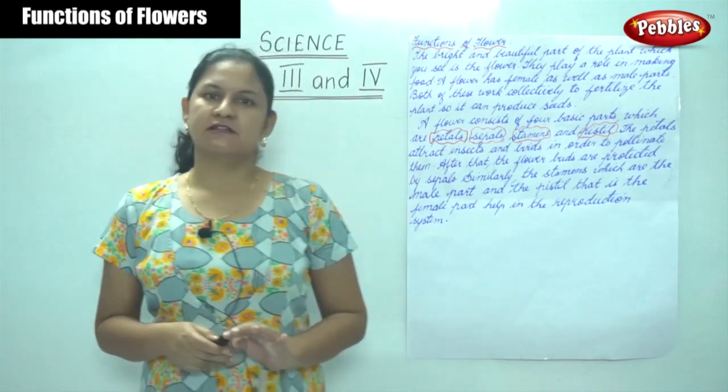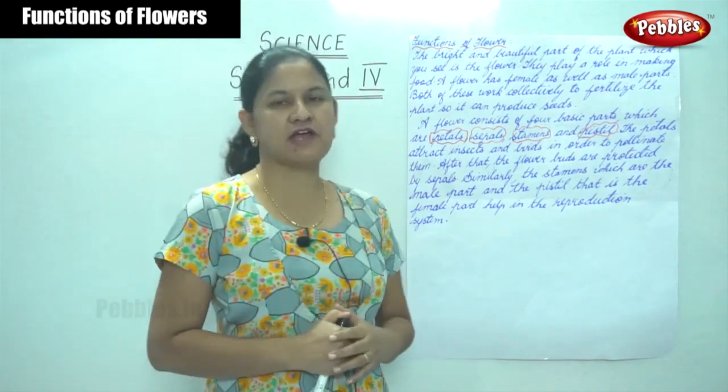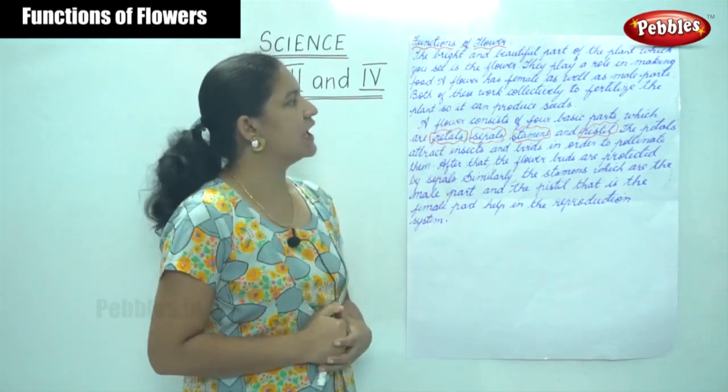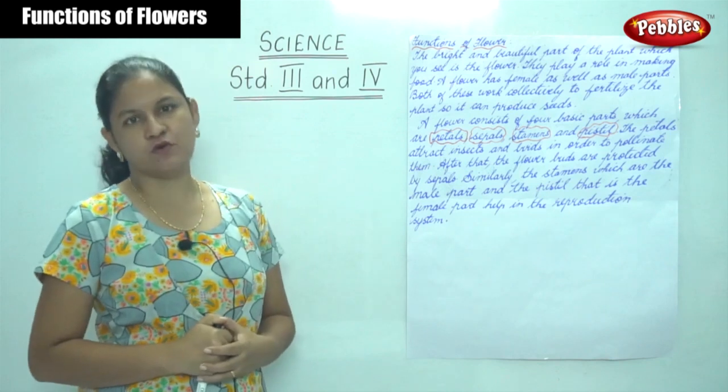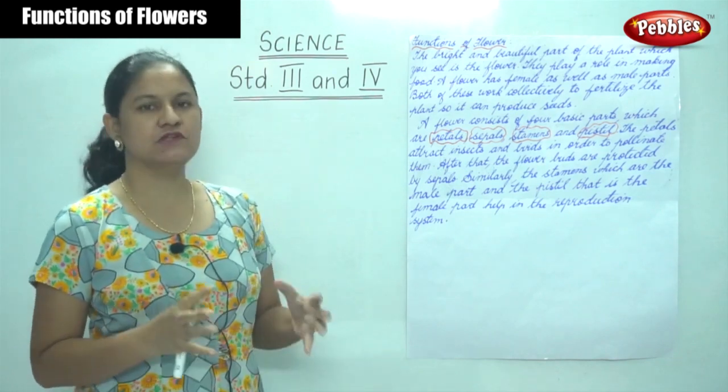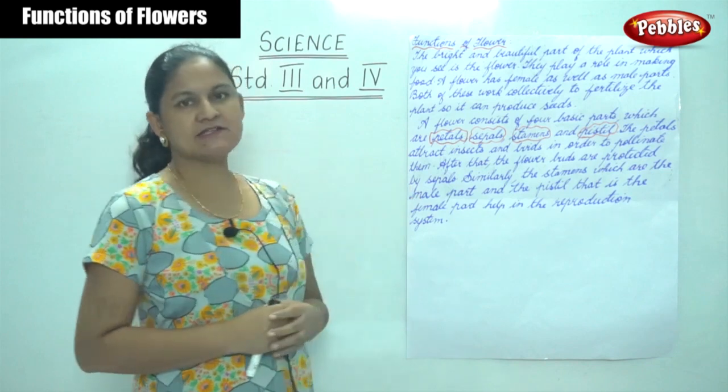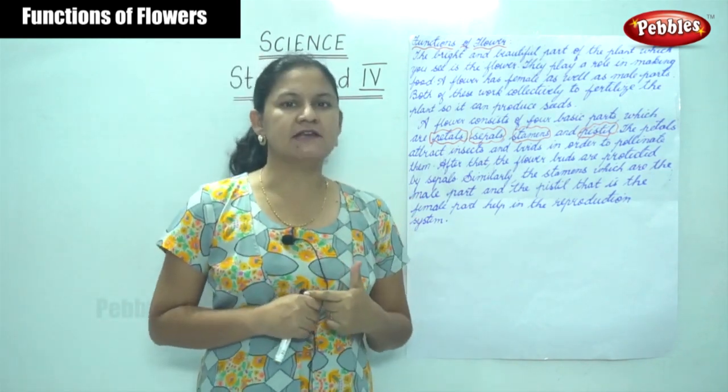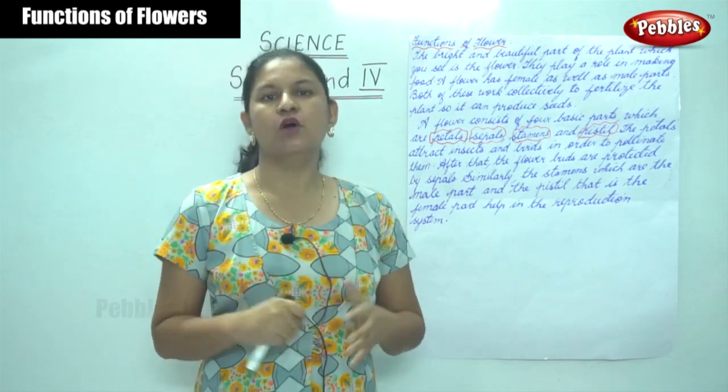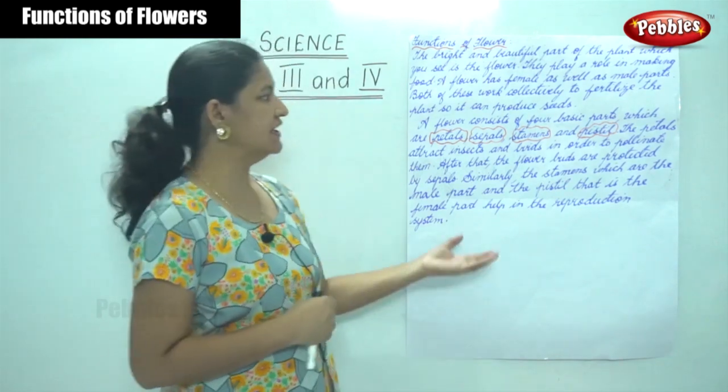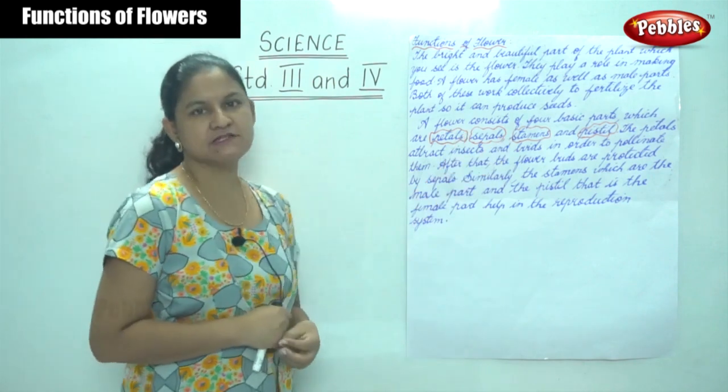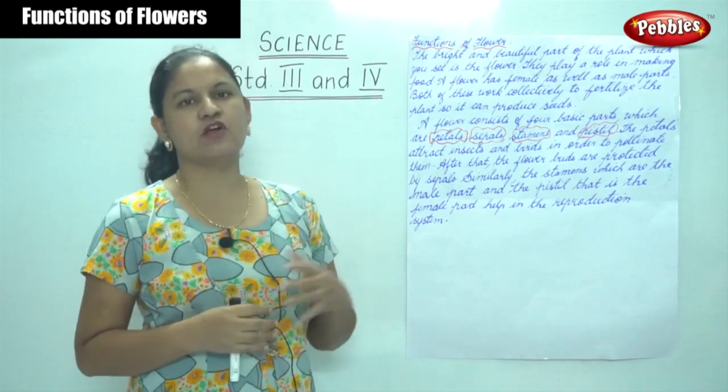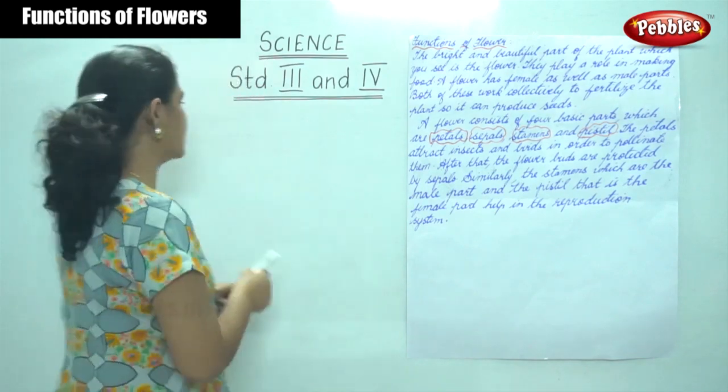The flower is the most bright and beautiful part of the plant which you see, and they play a role in making food just like the leaves. A flower has two parts - a male and a female part - and both work collectively to fertilize the plants so that it can produce more seeds. And then moving on to the main parts of a flower.